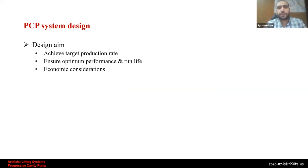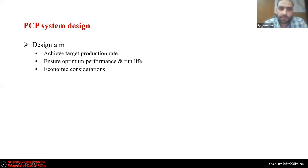Now let's talk about system design. The target of design is to select all system components that will achieve the target production rate while maintaining optimum performance and acceptable run life. Optimum performance means none of the components should be overloaded — for example, the downhole pump has a pressure rating, and if this rating is exceeded, the pump will have a premature failure. Also, each rod grade has a certain maximum torque limit.